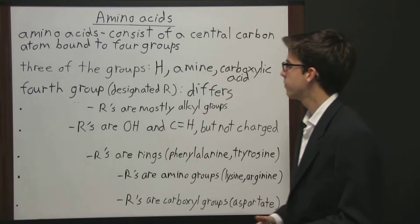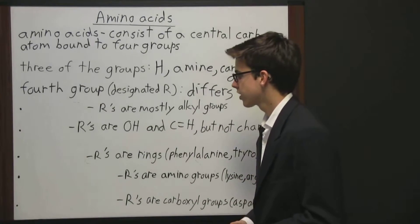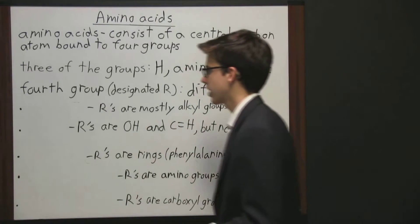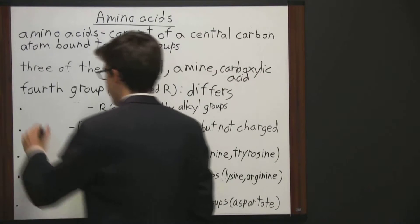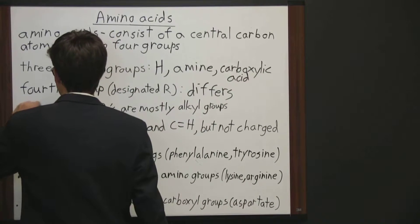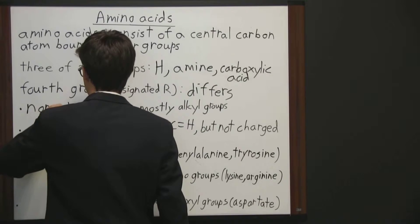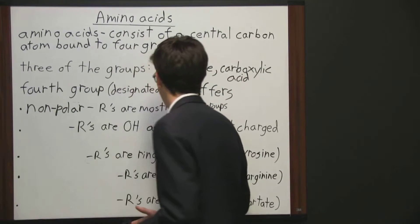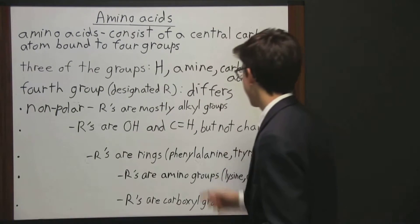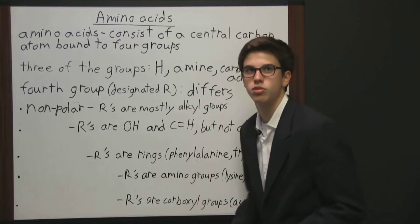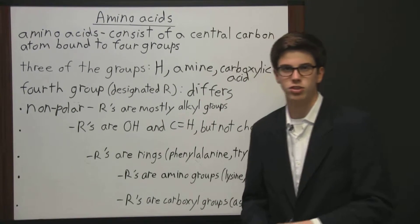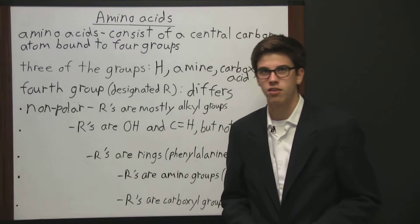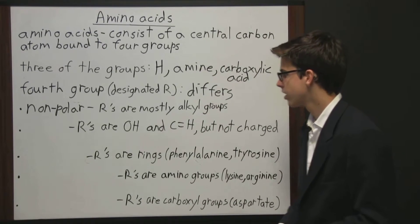We can classify amino acids into five different groups. The first is nonpolar, where the R groups are mostly alkyl groups — examples include alanine, valine, and leucine.